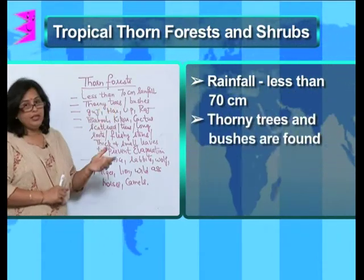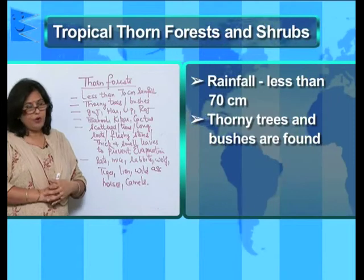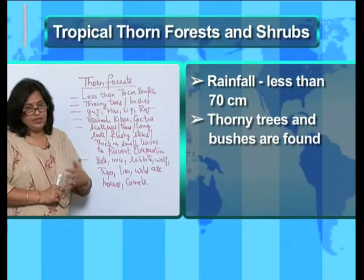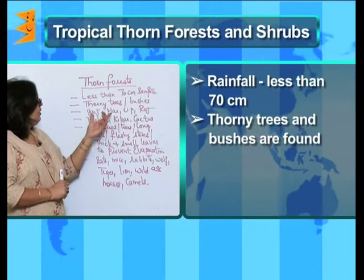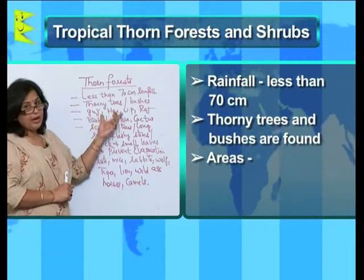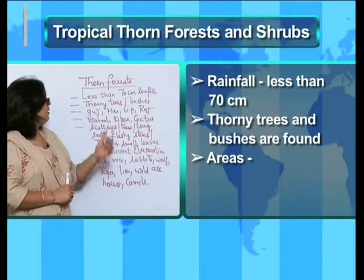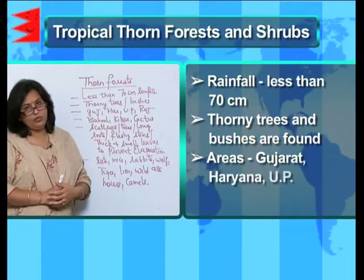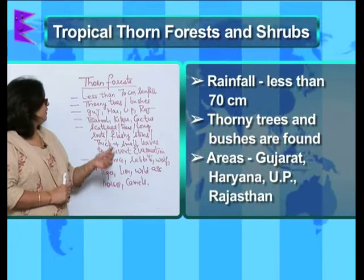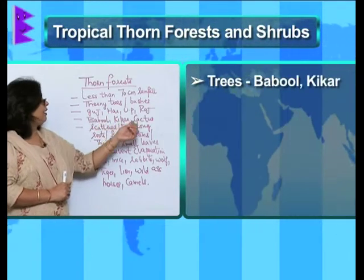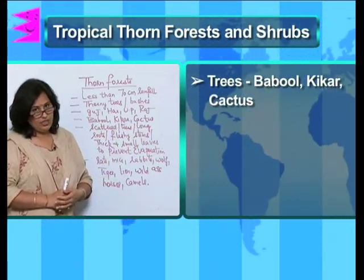The trees are thorny and only bushes are found — not much vegetation. The trees are scattered. The areas which comprise the thorn forest are Gujarat, Haryana, Uttar Pradesh, and of course Rajasthan. Babool, Kikar, and Cactus are the main vegetation found here.